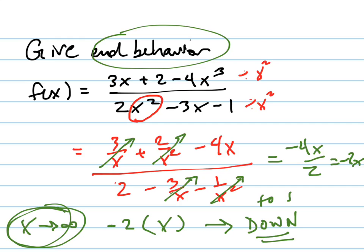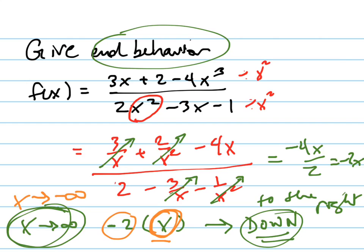Down to the right, the graph goes down. And then to the left, I'll change colors here, to the left is x goes to negative infinity. Well, if I plug in a negative number here, a negative times a negative is going to be a positive.